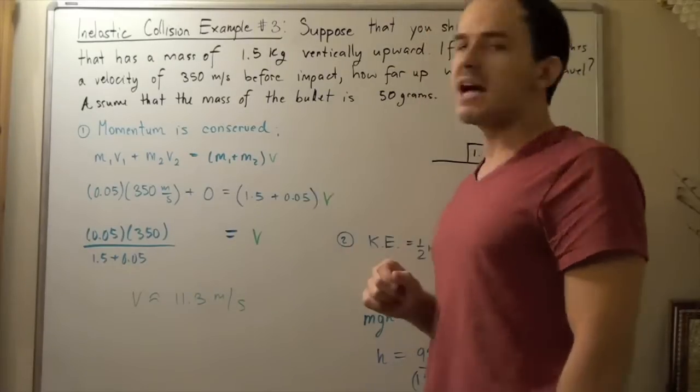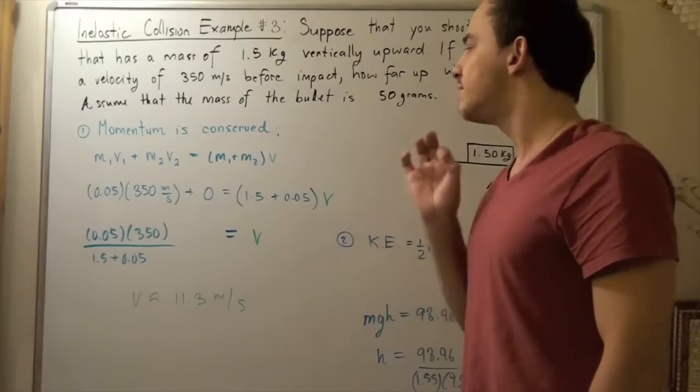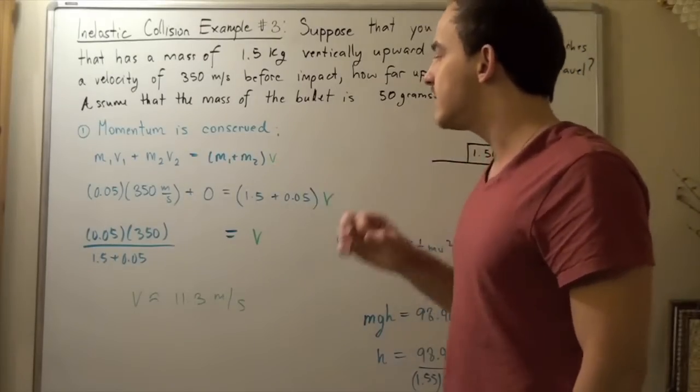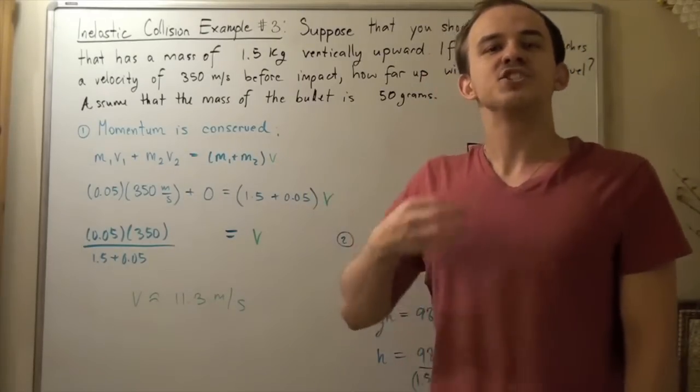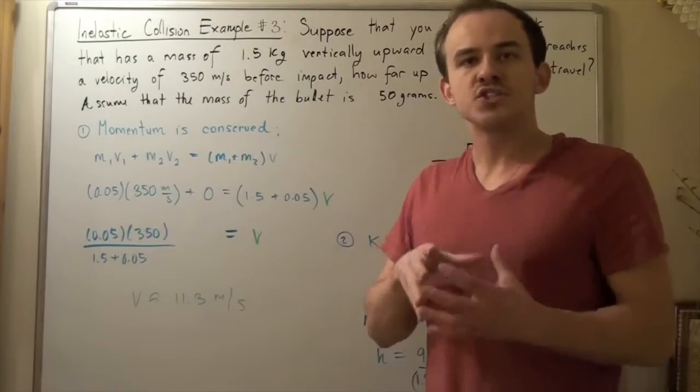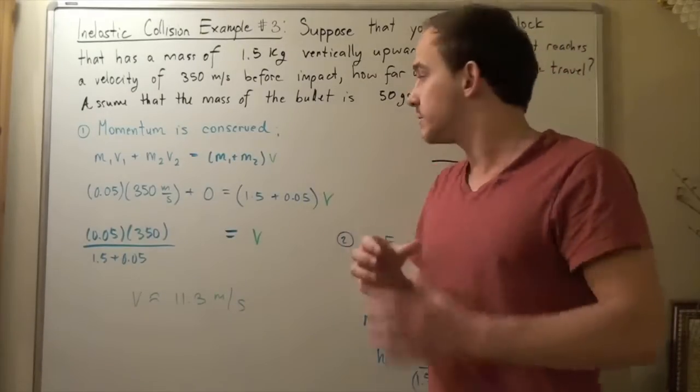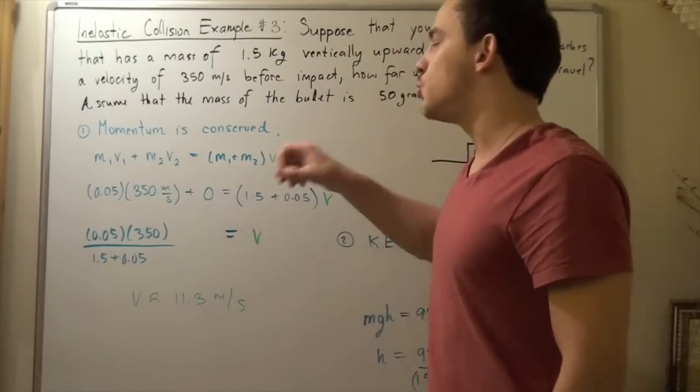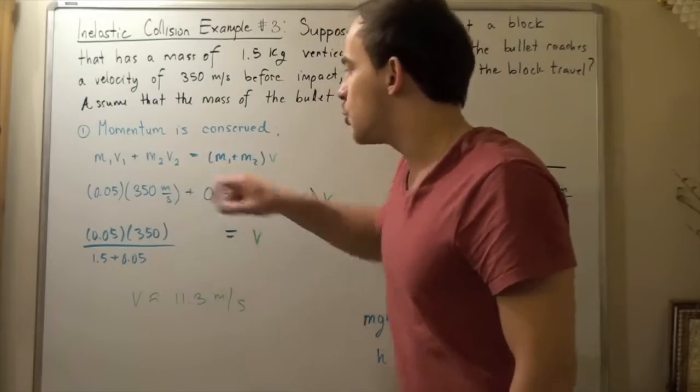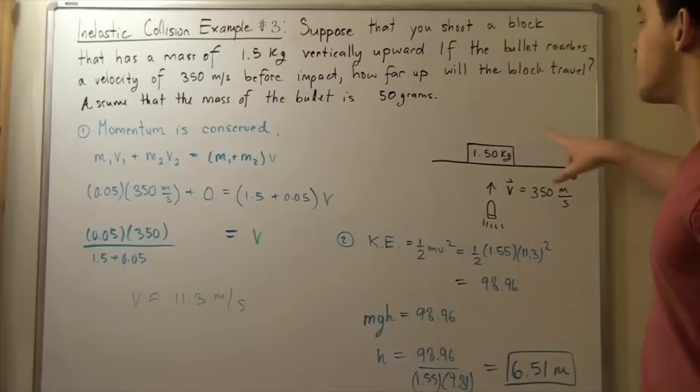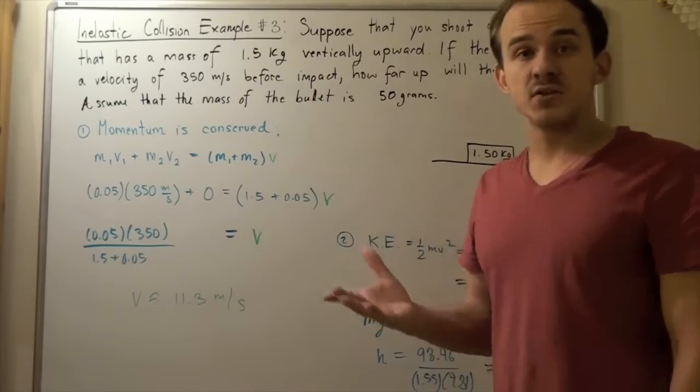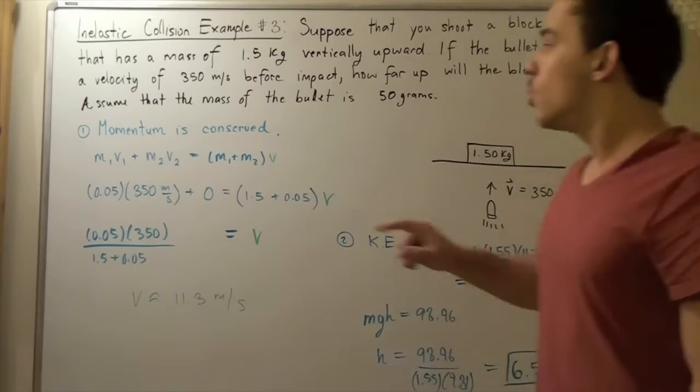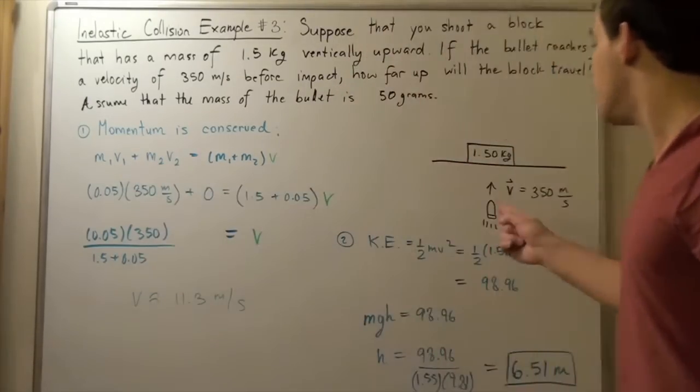We don't know what the final velocity is. That's what we want to find because our velocity will tell us how much kinetic energy was transformed. The m1 and m2 we know. V2, the initial velocity of the block, is simply zero—our block is not moving. The initial velocity of our bullet is 350 meters per second.